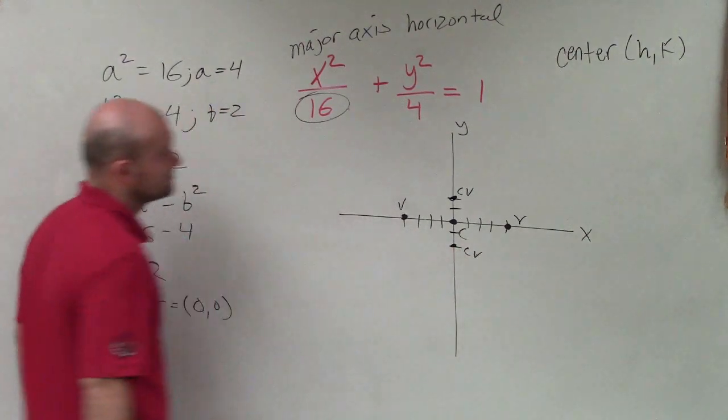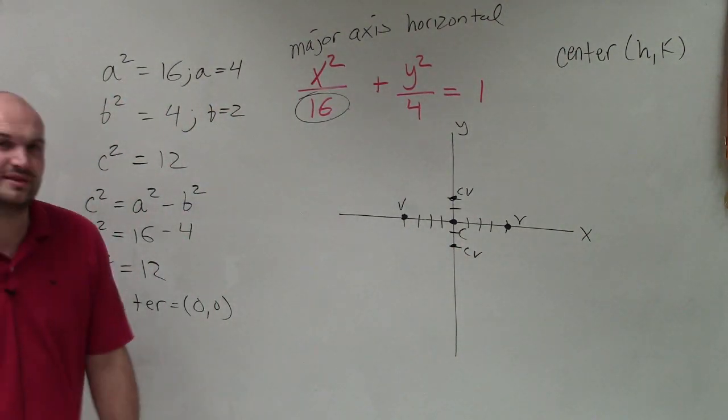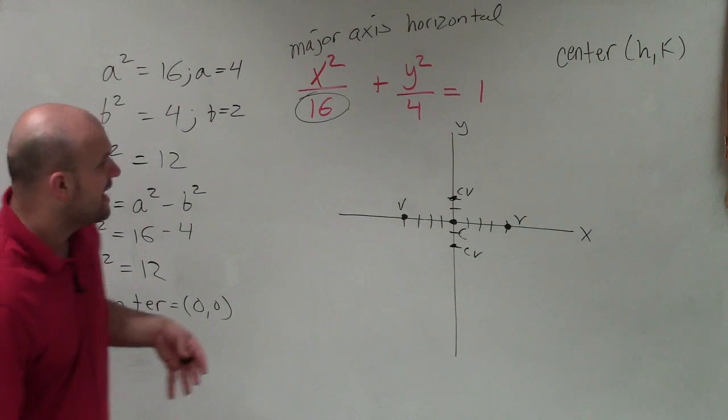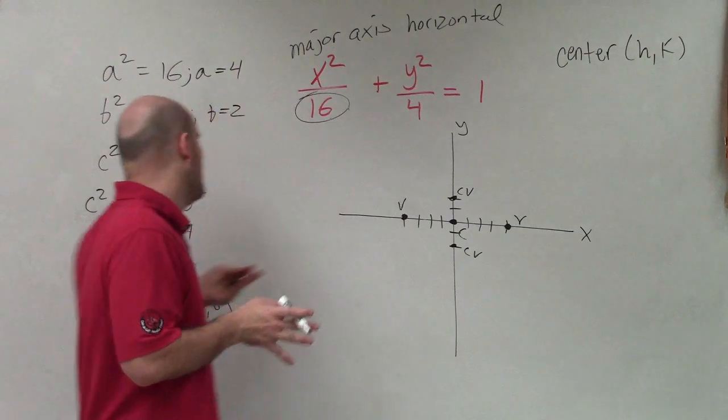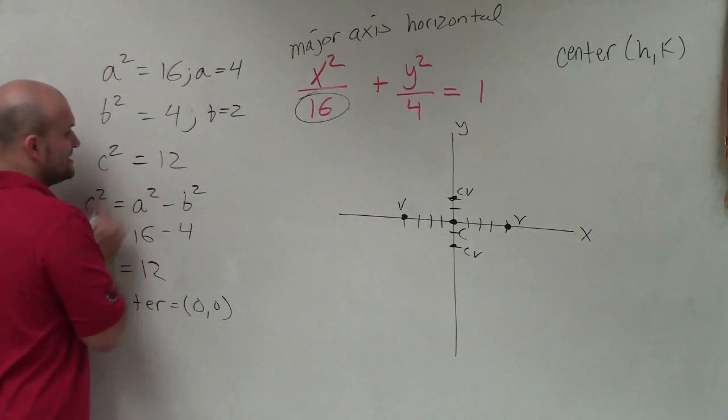my minor axis, which is vertical. And I didn't say to go and find them, but that's one thing. Those are what we call our co-vertices. And then remember, the foci is between the center and the vertices, and that's going to be a distance of c.